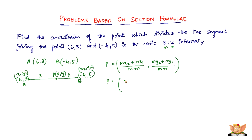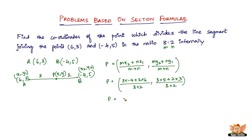So P equals: x = (3 × (-4) + 2 × 6) / (3 + 2) and y = (3 × 5 + 2 × 3) / (3 + 2). Solving: 3 × (-4) = -12, plus 2 × 6 = 12, divided by 5. And 3 × 5 = 15, plus 2 × 3 = 6, divided by 5.